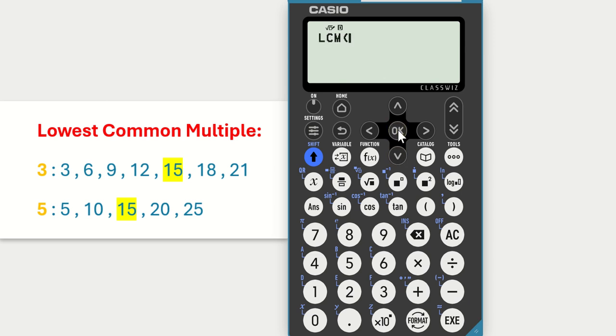We now want to input the two numbers we want to find the lowest common multiple of. So we type in 3, then we need to put a comma in. The comma is the blue little comma above the bracket. So you need to press the shift key, then press the bracket and then press 5 for my second number and then close the bracket by clicking on bracket symbol.